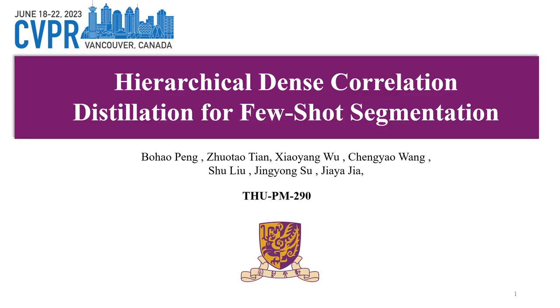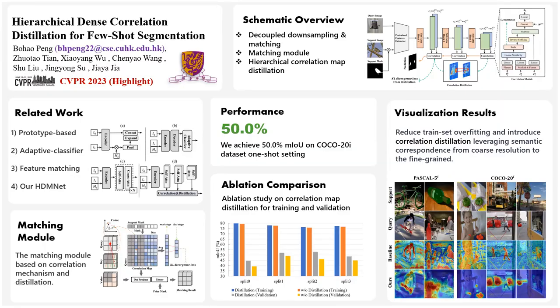My name is Bo Hao Peng. It is a great honor to introduce our work, Hierarchical Dense Correlation Distillation for Few-Shot Segmentation. We solve the challenges of few-shot segmentation using a novel framework. Our method employs decoupled down-sampling and matching, enabling effective information extraction and semantic correspondence mapping. The matching module, based on correlation and distillation, refines the feature maps. With this hierarchical approach, we transfer semantic correspondence from coarse to fine-grained levels. Our method achieves impressive results, including a 50-point mIoU on the COCO dataset in the one-shot setting.